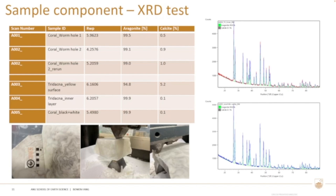For the XRD test, the two main parts of our standards are almost 100% aragonite. The difference between organite and calcite is that they are both calcium carbonate but have different crystal structures. We want 100% aragonite to match the coral and clam standard matrix. Some comparison samples such as the coral worm hole — a boring organism — are not 100% aragonite, and the clam yellow surface layer is only 95% aragonite, so we discard all of those to ensure the collected powder is 100% aragonite.